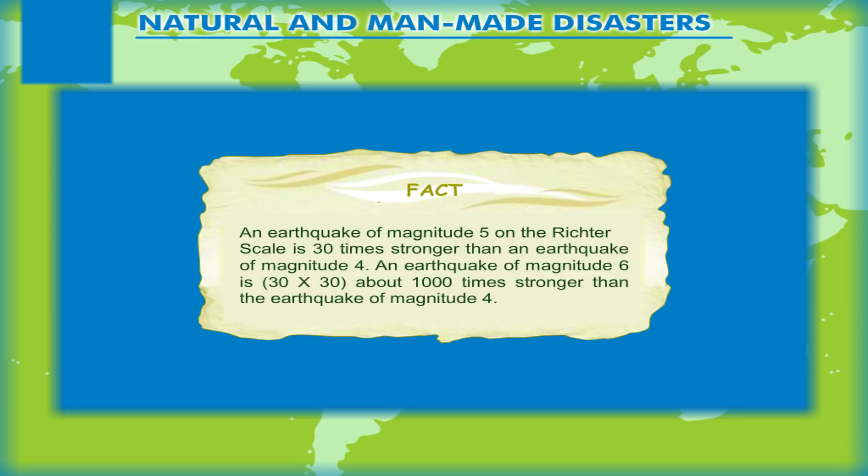An earthquake of magnitude 5 on the Richter scale is 30 times stronger than an earthquake of magnitude 4. An earthquake of magnitude 6 is 30 into 30, about 1000 times stronger than the earthquake of magnitude 4.